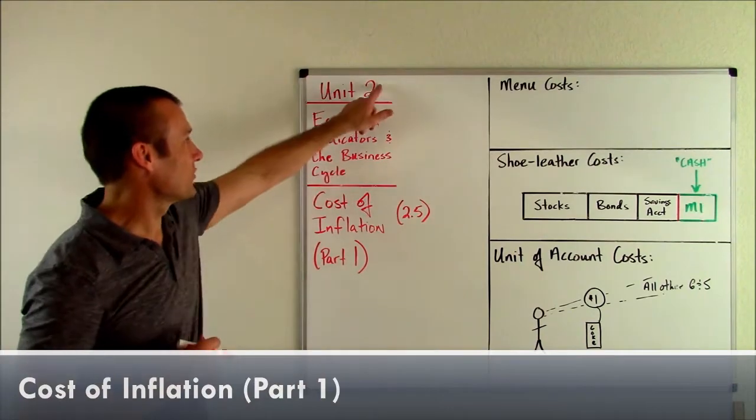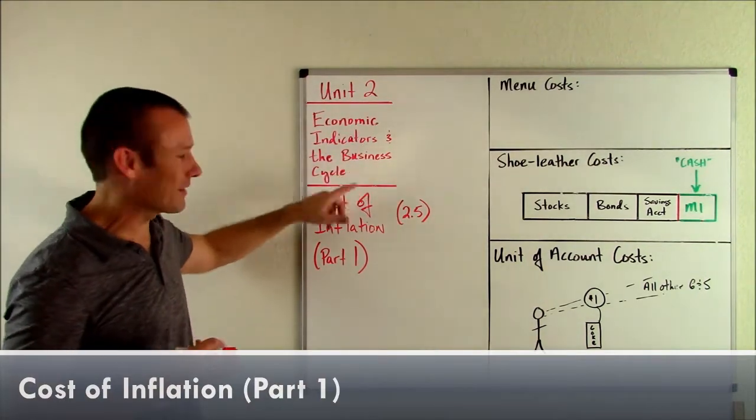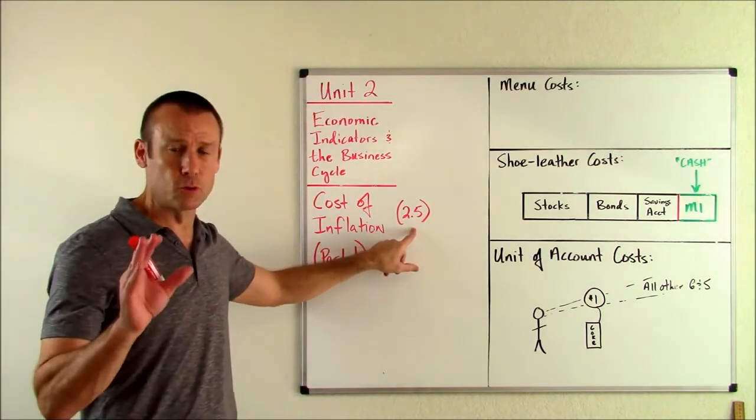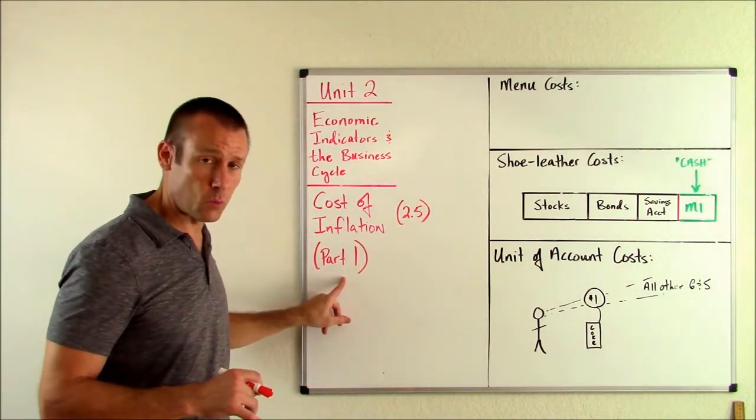Hey everybody, welcome back. We are on Unit 2, Economic Indicators and the Business Cycle. In this video, we're focused on the cost of inflation, which is subunit 2.5, and this is part one.